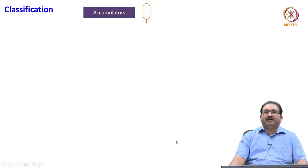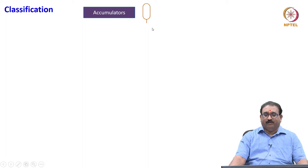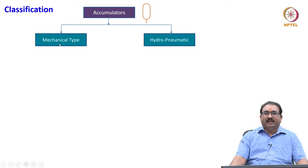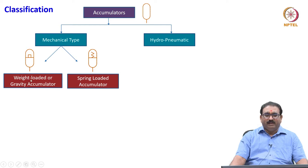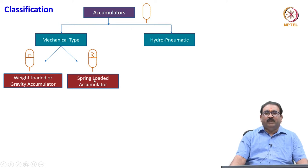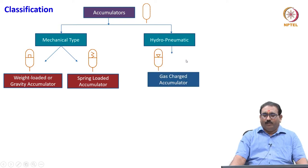Let us see very quickly how these accumulators are classified and used in industries. As we already studied, in fluid power symbols, accumulators are represented using this symbol. Accumulators are classified as mechanical type and hydropneumatic type. Under mechanical type, accumulators are classified as weight loaded or gravity accumulator — you see the symbol, the dead weight is placed here — and spring loaded accumulator, where you see the spring on one side and the inlet to the pump on the other.